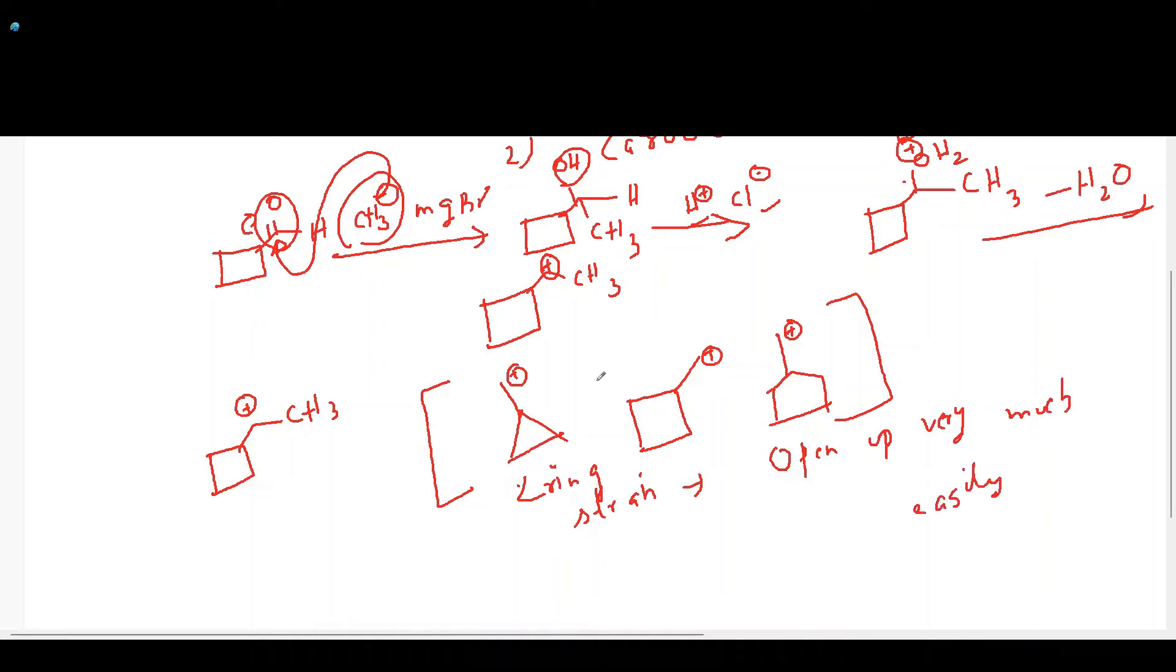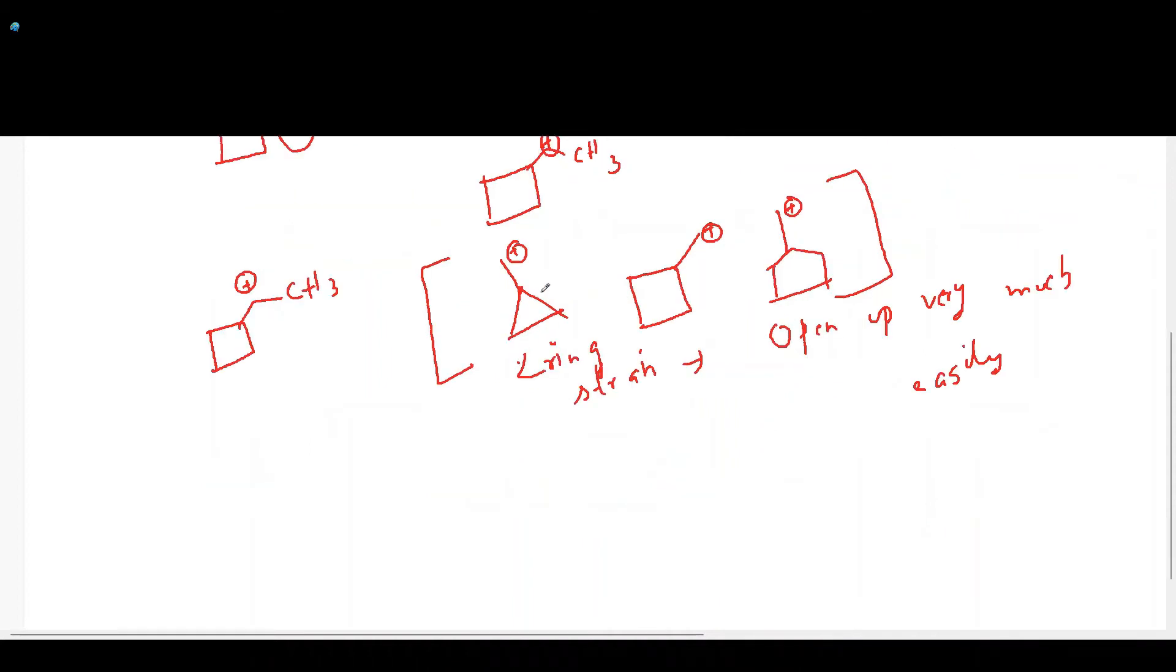Due to ring strain, it will allow itself to open up very easily. When it has a positive charge like this, this bond will migrate here, relieving the angle strain to form a substrate with less angle strain. The same happens in the case of cyclobutyl. This C will migrate to form more stable cyclopentanyl.